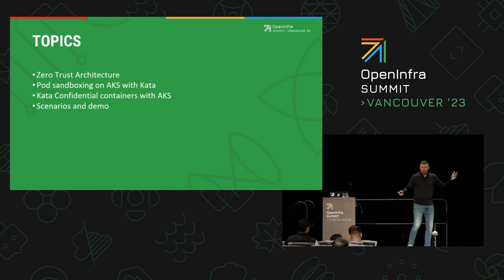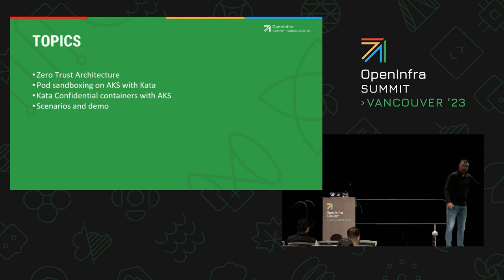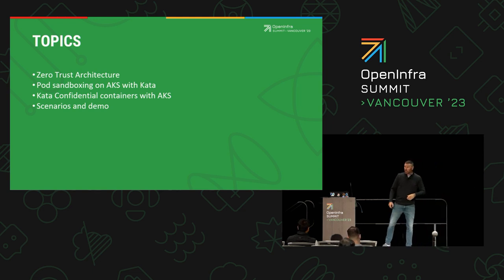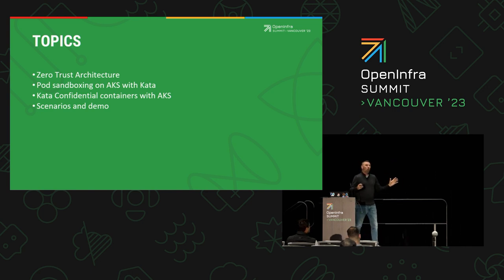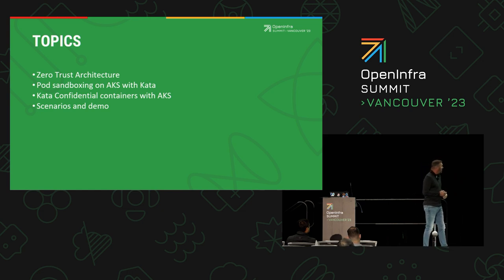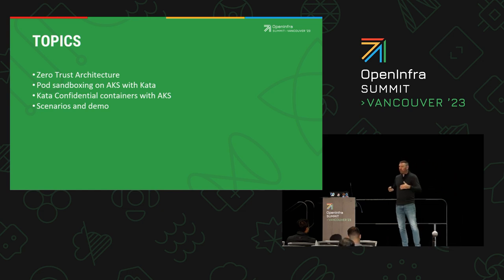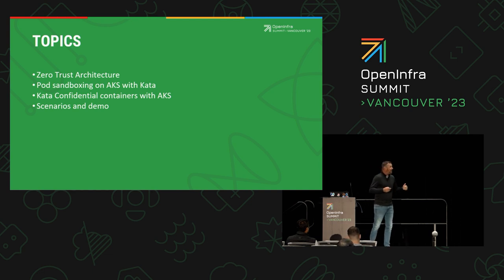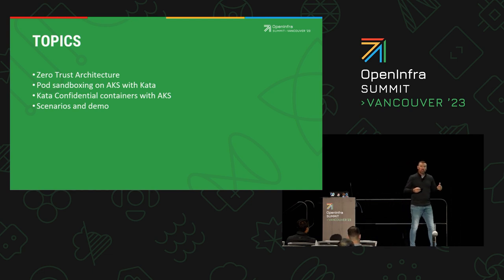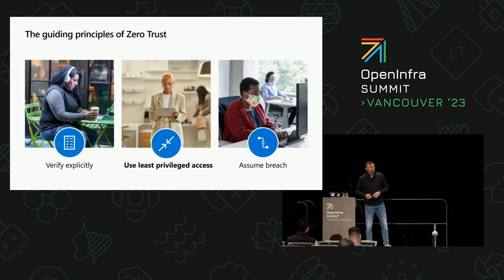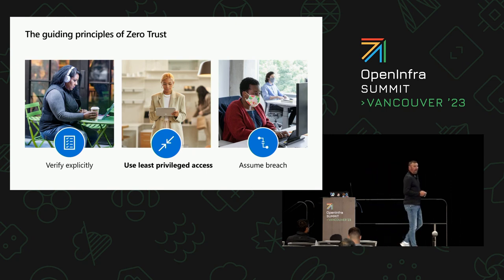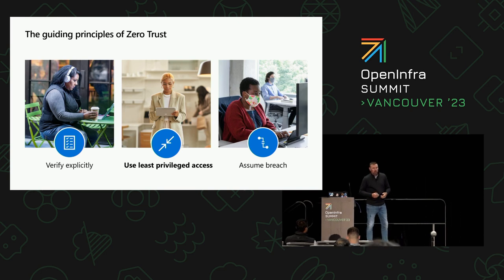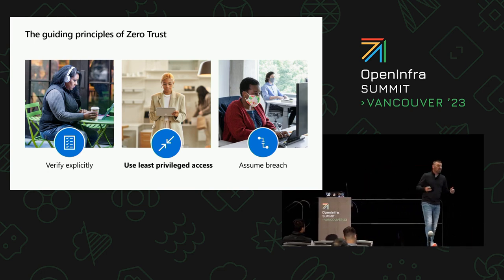First and foremost, we'll go through the principles — probably a lot of you know this, but we'll level set the room. Zero-trust architecture: verify explicitly, use least privileged access, and always assume breach.